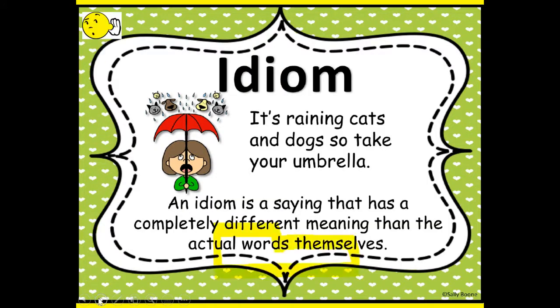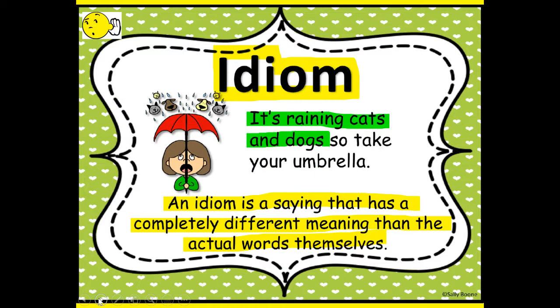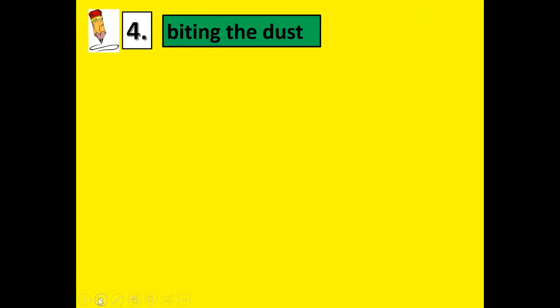Another form of figurative language is idiom. An idiom is a saying that has a completely different meaning than the actual words themselves. For example, 'It's raining cats and dogs, so take your umbrella' — we know that cats and dogs are not actually raining from the sky. Get your pencil for number four. The idiom is 'biting the dust' — write biting the dust. It's an idiom that means to die.